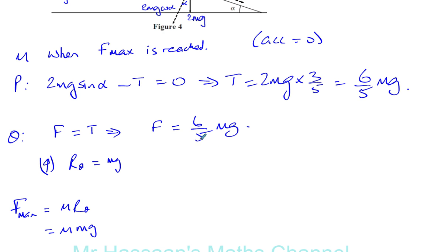So we can now use this equation. We can say mu mg is equal to 6 over 5 mg. Mg is cancelled. So mu is equal to 6 over 5, which is like 1.2.